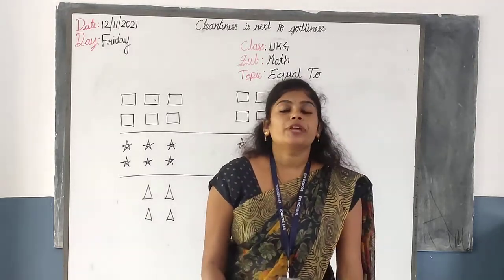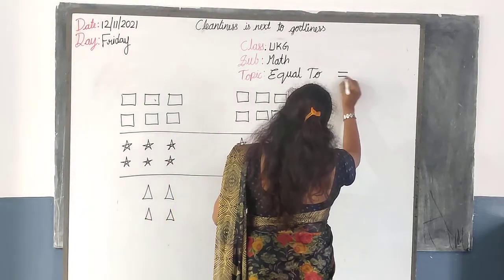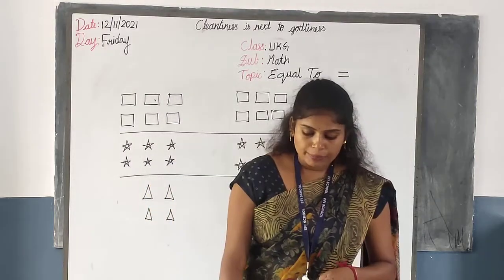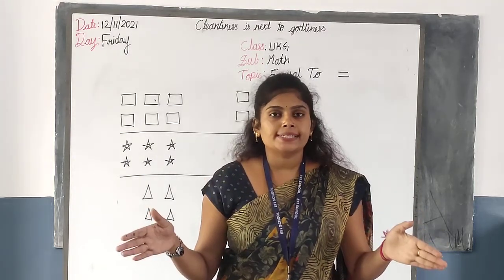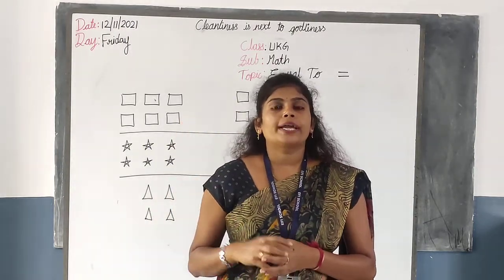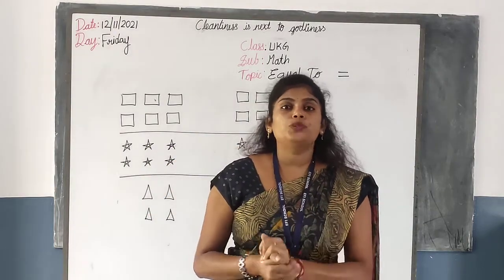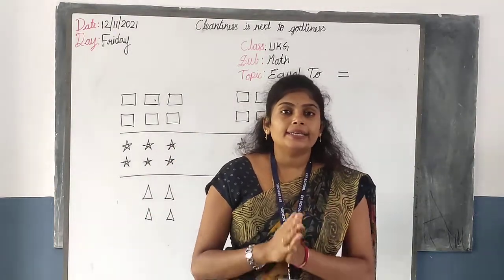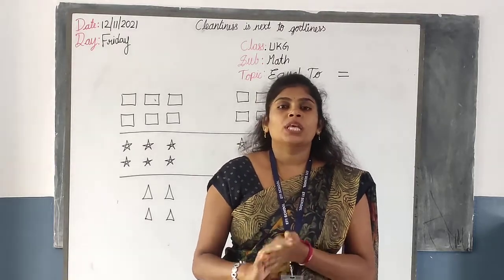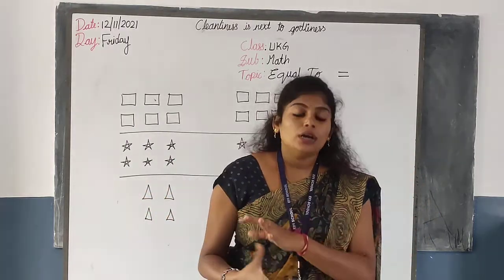In today's class, we are going to learn about equal, ok? See children — equal to. This is the symbol for equal. Equal means what, children? More is compared to less — that is an increase in the number, ok? It is more in count. Less is compared to more — it is less in count. Whether it is an object, a number, or a pattern, we are comparing quantities as less or more. What is equal? Equal means both sides are equal — not only the shape, not only the numbers, but also the objects, ok?